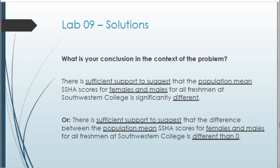For the conclusion within the context of the problem, one way we could write it: there is sufficient support to suggest that the population mean SSHA scores for females and males for all freshmen at Southwestern College is significantly different. When writing conclusions, we write that there is or is not sufficient support to suggest the alternative hypothesis is true, and then fill in the context of the problem. In this case, our alternative for the two-sided test is simply that the means are unequal to each other, or that their difference is not equal to zero.